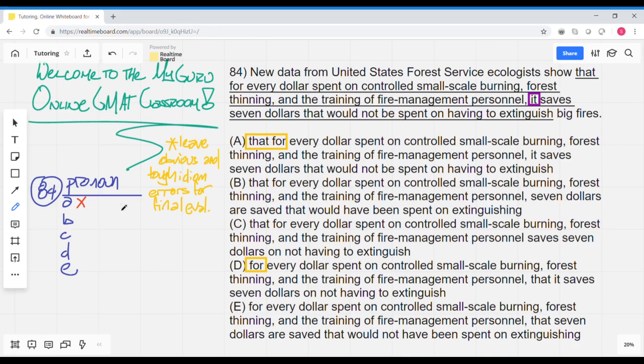So we've got choice B: that for every dollar spent on a controlled small-scale burning, forest thinning, and the training of fire management personnel, $7 are saved that would have been spent on extinguishing. No pronouns there. That's okay.